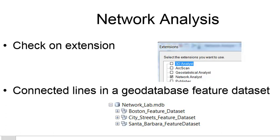Welcome back to GIS Analysis at the University of Alaska Fairbanks. This week we're going to work with network analysis. A network is connected lines, and we could do several types of analysis with connected lines — typically it's going to be a street network. Since it's an extension, you always have to have that extension checked on. Go to the Customize menu in ArcMap, go to Extensions, and make sure that Network Analyst is checked on. Our network dataset is going to be in a GeoDatabase feature dataset, and when you download the data for this week, you'll have three different feature datasets to work with.